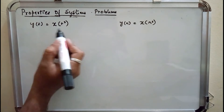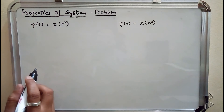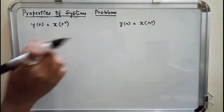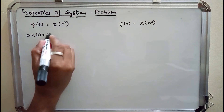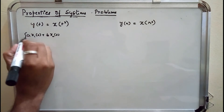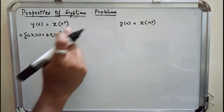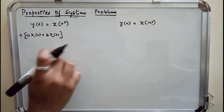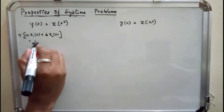The third system is represented by y(t) = x(t²). For the linearity property, substituting x(t) as a·x1(t) + b·x2(t), I get a·x1(t²) + b·x2(t²), which equals a·y1(t) + b·y2(t). Hence the system is linear in nature.